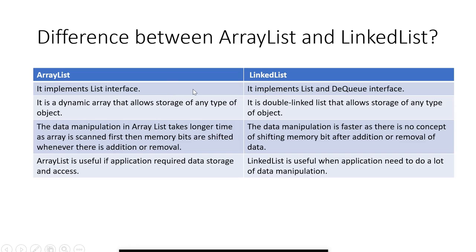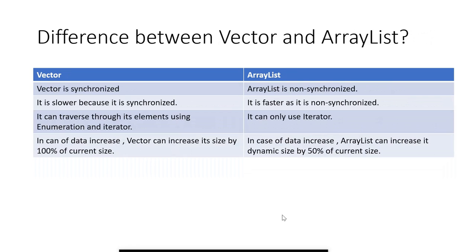What is the difference between ArrayList and LinkedList? ArrayList implements the List interface; LinkedList implements both the List and Deque interfaces. ArrayList is a dynamic array that allows storage of any type of objects, while LinkedList is a doubly linked list that allows storage of any type of object from either side. Data manipulation in ArrayList takes longer time, while data manipulation in LinkedList is faster because it does not have the concept of shifting memory bits after addition or removal. ArrayList is useful when the application requires data storage and access, while LinkedList is useful when the application needs to do a lot of manipulation.